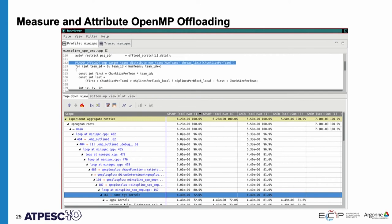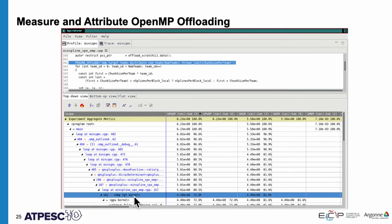We can also measure and attribute OpenMP offloading. This shows OpenMP code being offloaded to the GPU, and we can show the full calling context in which that occurs. You don't have to do anything special to get this — you just say -E GPU equals AMD or NVIDIA and all of this gets collected for you.